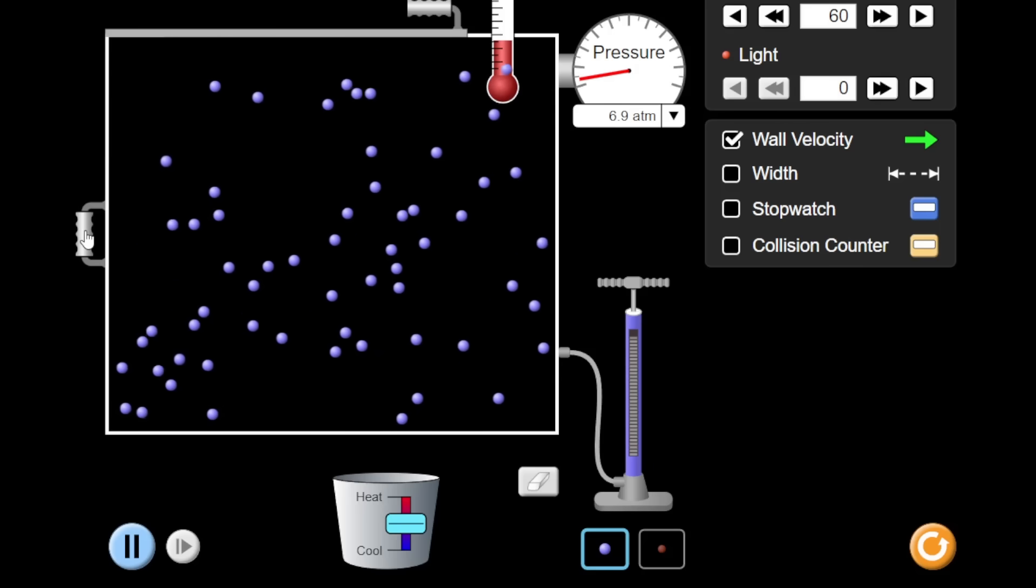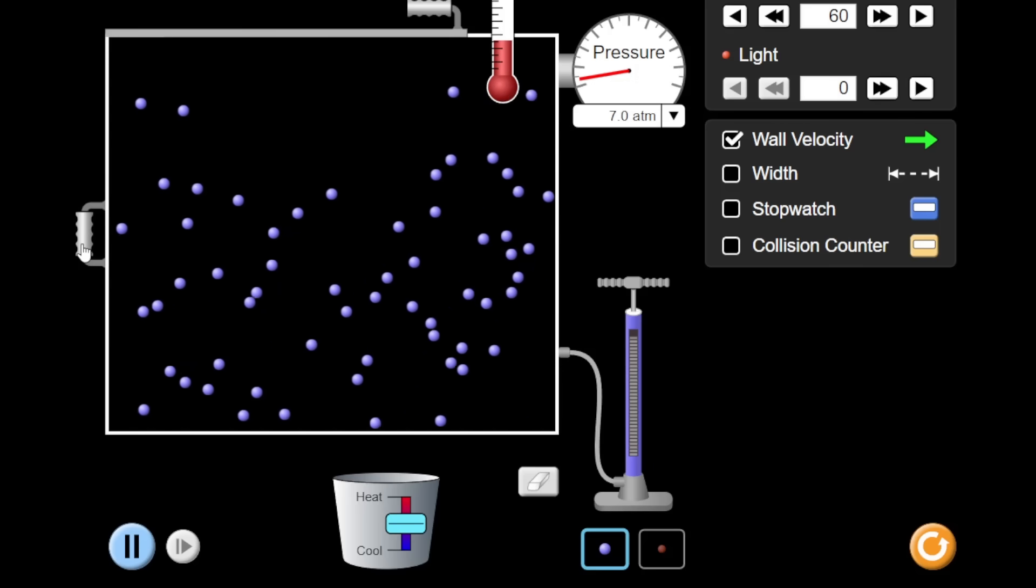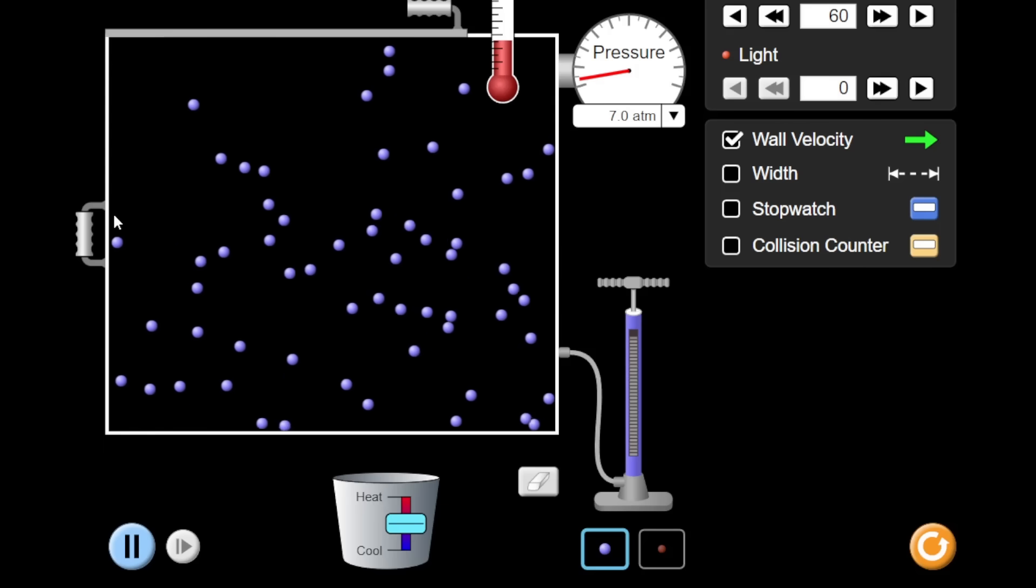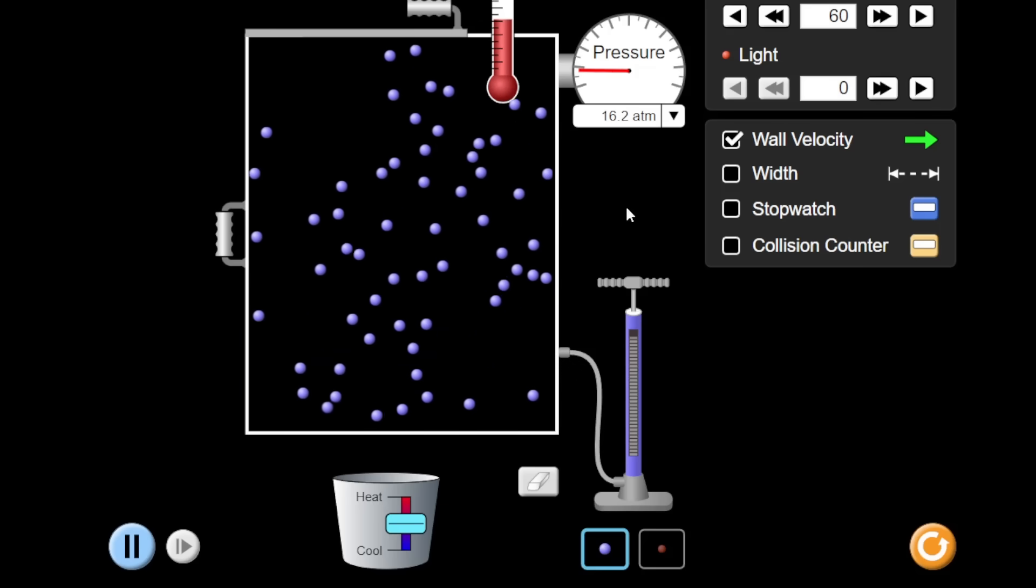But what happens if I make this container smaller? What happens if I decrease the volume? Watch the pressure gauge as I decrease the volume. Can you see that the pressure is increasing?